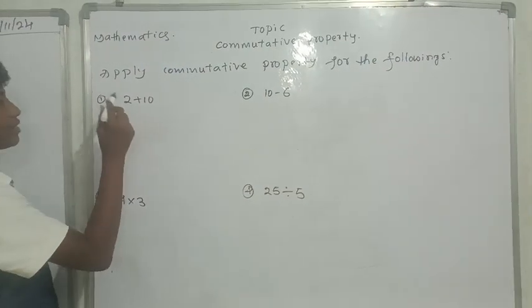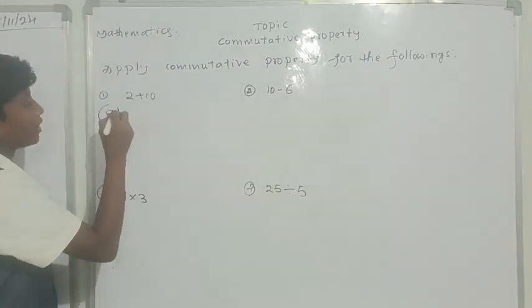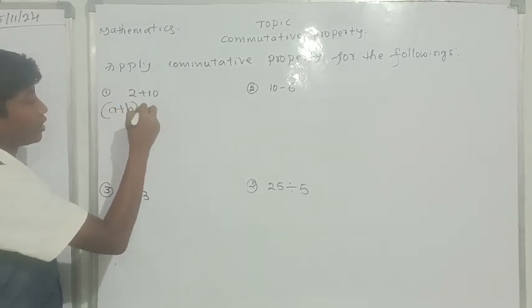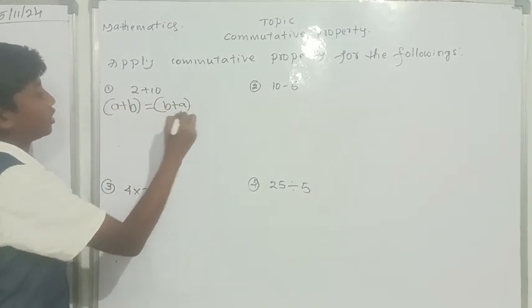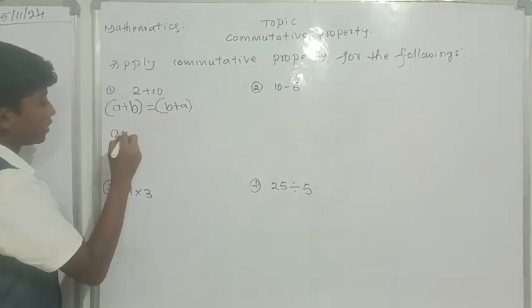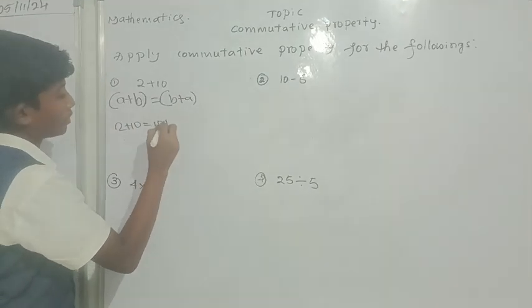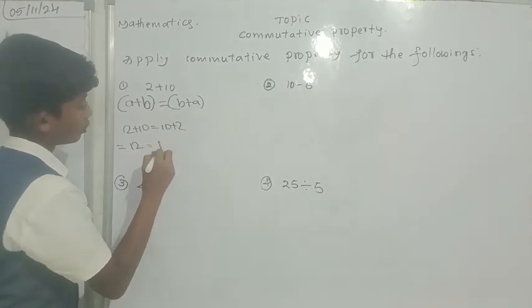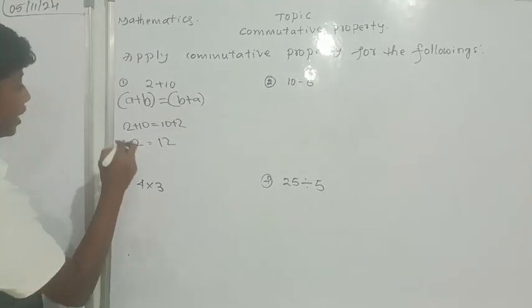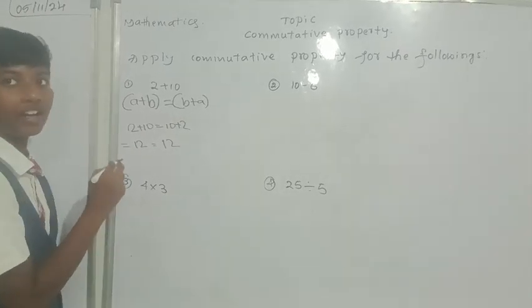First question is 2 plus 10. The formula is A plus B is equal to B plus A. The question is 2 plus 10 is equal to 10 plus 2 is equal to 12. LHS is equal to 12 and LHS is equal to RHS. So, Commutative Property holds good under addition.